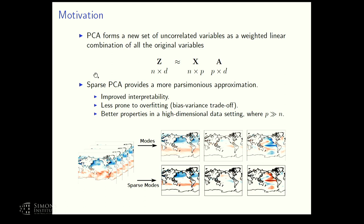In machine learning, we often use PCA as a black box tool to extract features for classification tasks. But in other domains, we want to use PCA to summarize and visualize the data, and to learn something about the coherent structure underlying a system. Interpretation of principal components can be difficult with many variables, since they are weighted linear combinations of all original variables. Sparsity is a great tool to improve interpretability and come up with a simpler, more parsimonious model.